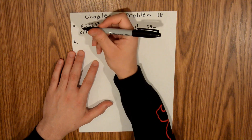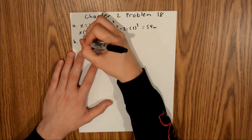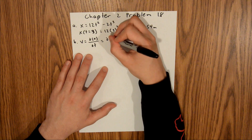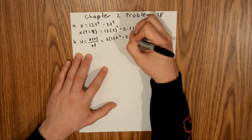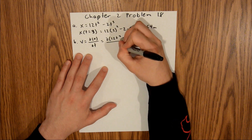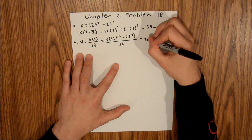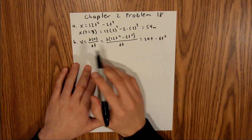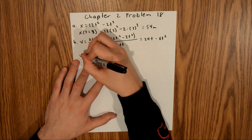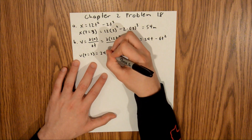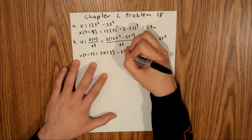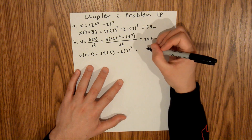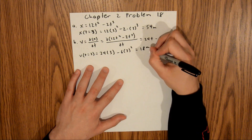For part B, you need to find the velocity at t equals 3. We know that velocity is equal to the derivative of our displacement with respect to t, which is the derivative of 12t squared minus 2t to the third with respect to t. That's going to be equal to 24t minus 6t squared. The velocity at t equals 3 is equal to 24 times 3 minus 6 times 3 squared, which is equal to 18 meters per second.